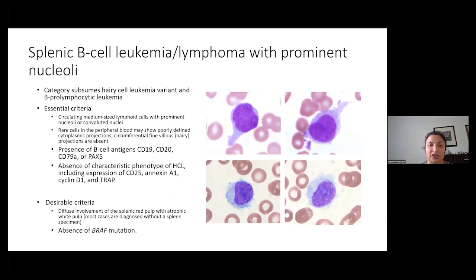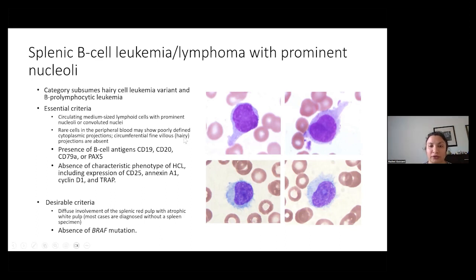To touch on splenic B cell leukemia lymphoma with prominent nucleoli: hairy cell leukemia variant and B proliferative leukemia are now part of this category. The essential criteria are that you have circulating medium-sized lymphoid cells with prominent nucleoli or convoluted nuclei; rare cells in the peripheral blood can show poorly defined cytoplasmic projections, but the fine hairy projections typical for hairy cell leukemia are absent. It shows the presence of B cell antigens CD19, CD20, CD79A, or PAX-5, and absence of the characteristic phenotype of hairy cell leukemia, which includes expression of CD25, annexin A1, cyclin D1, and TRAP.